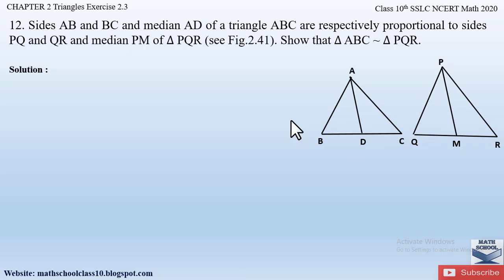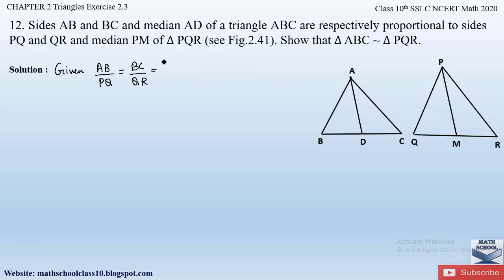Let us write down what is given: AB/PQ = BC/QR = AD/PM — these three proportions are equal. What we have to prove is that triangle ABC is similar to triangle PQR. First, let us consider which similarity criteria we can use to prove this.